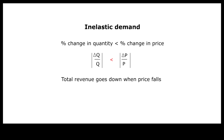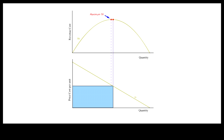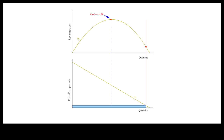Any further price decrease beyond the maximum total revenue point will lead to lower revenue because the percentage change in quantity will be smaller than the percentage change in price. When that happens, demand is said to be inelastic and the elasticity of demand has an absolute value less than 1. For example, a 10% price decrease leading to a 5% quantity increase gives an elasticity of demand with an absolute value less than 1. Total revenue decreases as price decreases when demand is inelastic; total revenue could instead be increased by raising price.